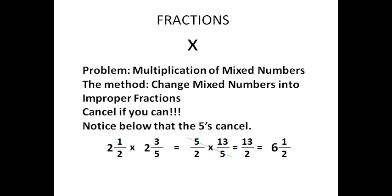Now for the multiplication of mixed numbers. The method is simple: change the mixed numbers into improper fractions, then cancel if you can. In our problem, two and one-half times two and three-fifths: two times two is four plus one is five, so two and one-half is five over two. For two and three-fifths: five times two is ten plus three is thirteen over five. We see a five on top and a five on the bottom — cancel them — leaving thirteen over two. Converting to a mixed number: two goes into thirteen six times with remainder one, so the final answer is six and one-half.